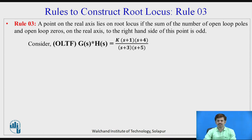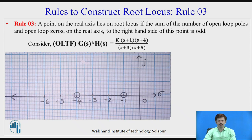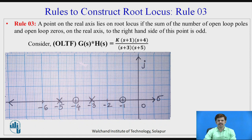For example, open loop transfer function K(s+1)(s+4) divided by (s+3)(s+5). Drawing the s-plane, the zeros are at minus 1 and minus 4 (represented by circles) and poles are at minus 3 and minus 5 (represented by crosses). To determine where the root locus exists on the real axis, we take a section between minus 1 and minus 3 and count the elements on the right-hand side, which gives a count of 1, which is odd.